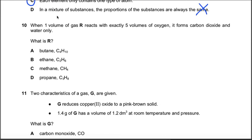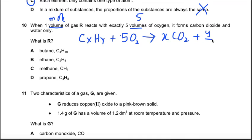Question number 10: when one volume of R reacts with five volumes of oxygen, you can read this volume as moles. When one mole of R reacts with five moles of oxygen, it forms carbon dioxide and water. What is R? Five moles of oxygen is used. CxHy, because I'm using x and y because I don't know how many carbon atoms and how many hydrogen atoms are present. But I know five moles of oxygen are used, so x moles of carbon dioxide and y by 2 moles of water will form. What would be the answer? This is the general equation.